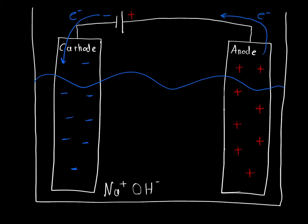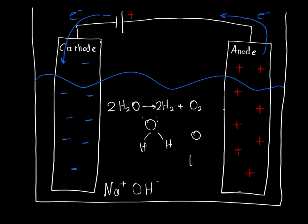The whole point of electrolysis of water is that you have two water molecules, and you want to turn them into hydrogen gas and oxygen. So you're taking the oxygen and hydrogens and separating them so that you have oxygen and then hydrogen.